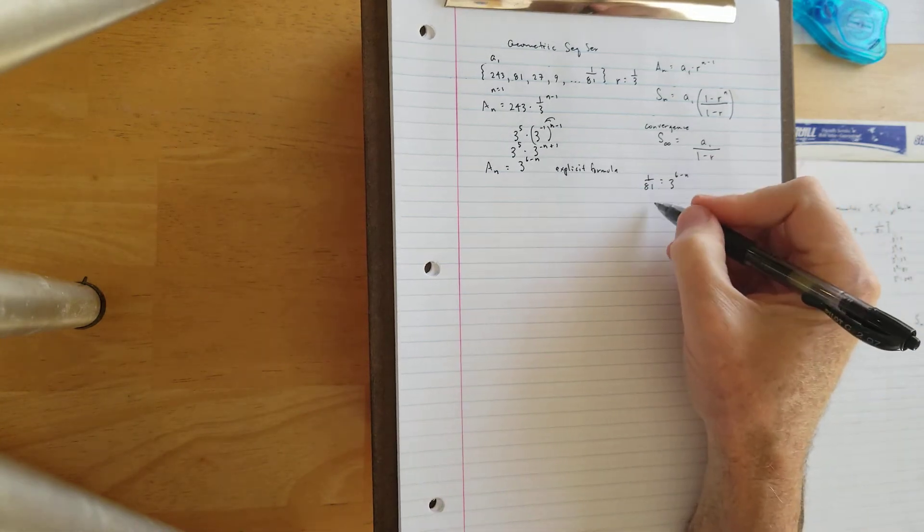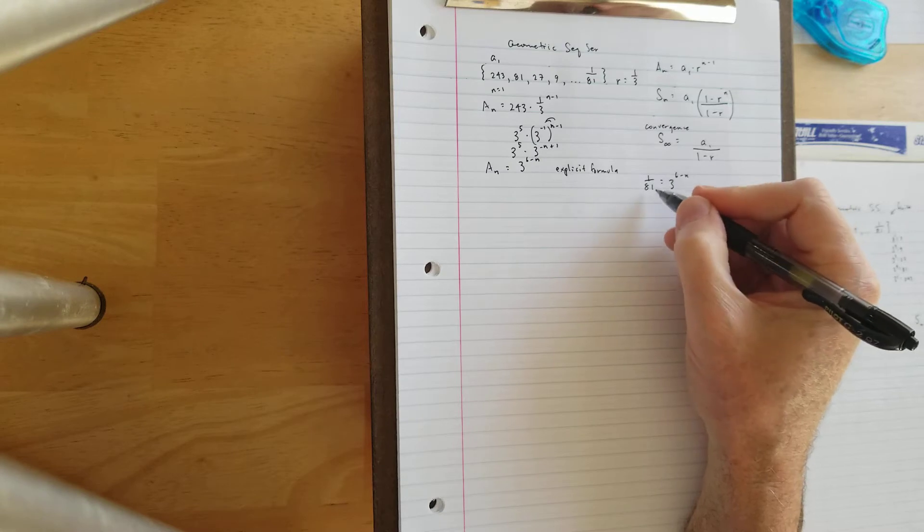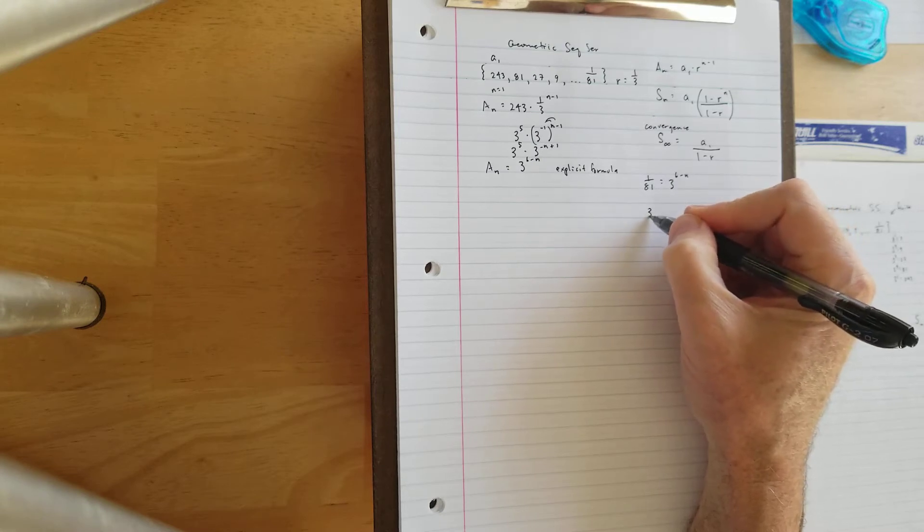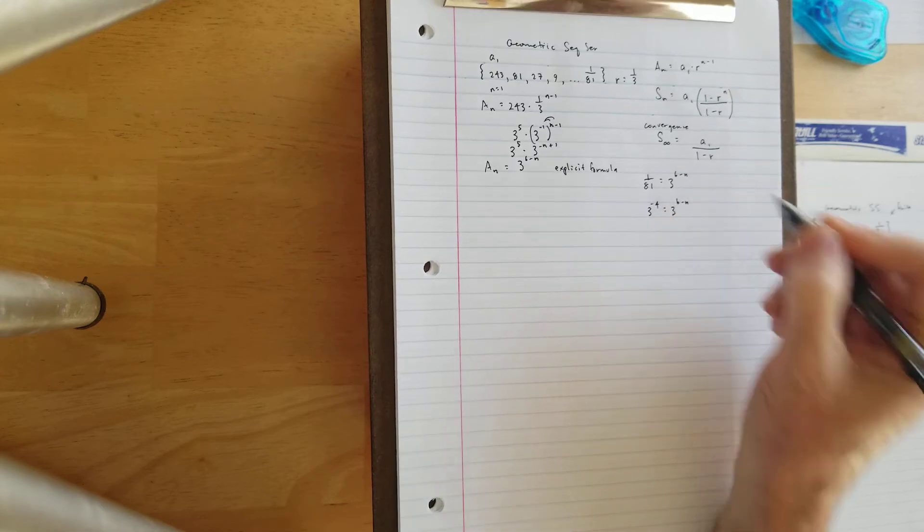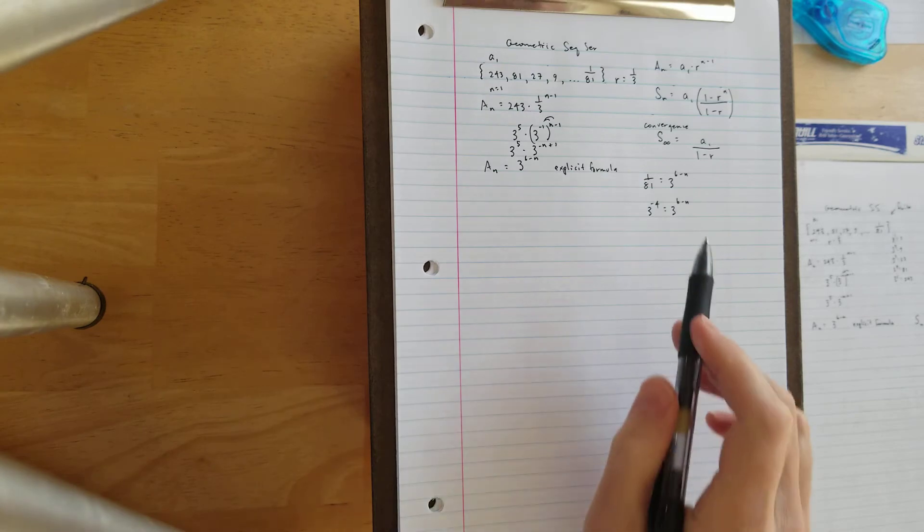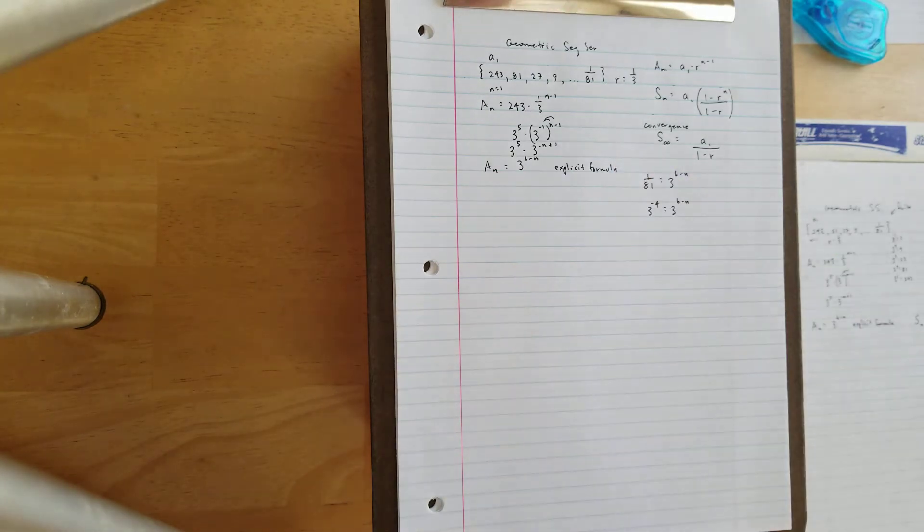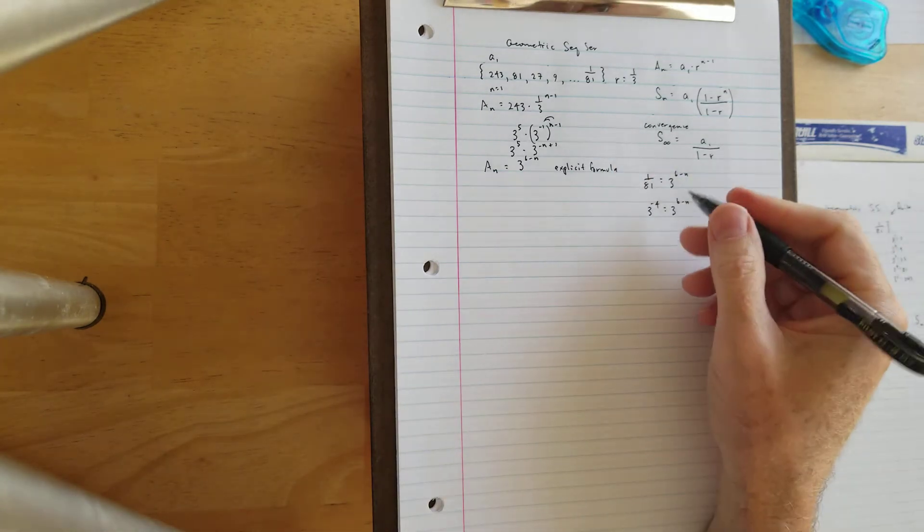We know that 81 is 3 to the 4th power, so we're going to rewrite that as 3 to the negative 4th. And then we're going to set each of those equal to each other and solve to calculate which term of the sequence 1 over 81 is.